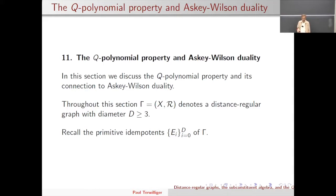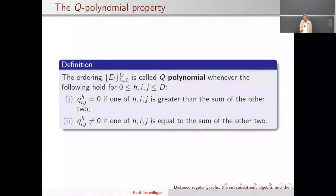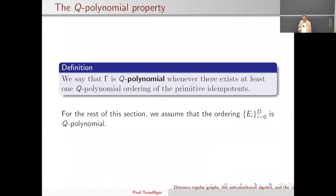Same setup as before — distance-regular graph gamma, diameter at least three, with primitive idempotents E_0 through E_D. I define an ordering of the primitive idempotents to be Q-polynomial whenever: Q^h_{ij} is zero if one of h, i, j is greater than the sum of the other two, and Q^h_{ij} is non-zero whenever one of h, i, j equals the sum of the other two — mirroring what happens for intersection numbers. The graph itself is Q-polynomial if at least one such ordering exists; there might be none, one, or more than one Q-polynomial ordering.